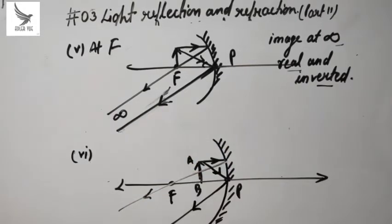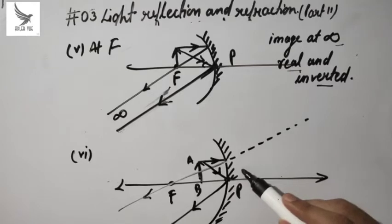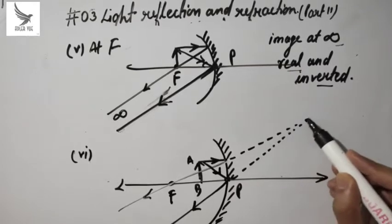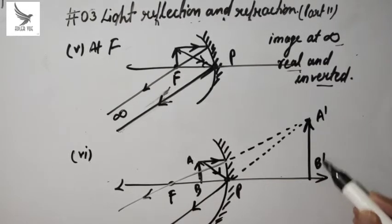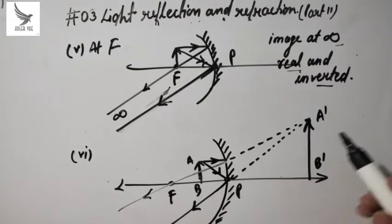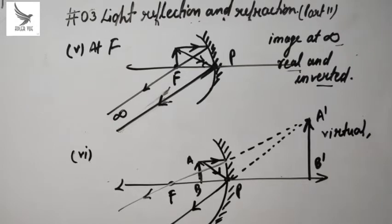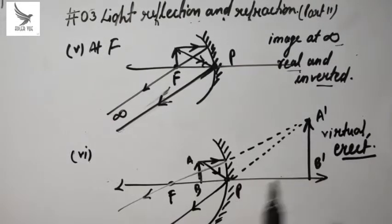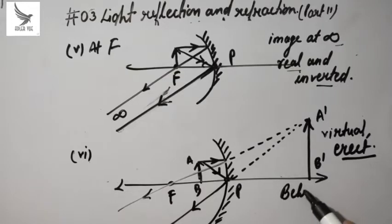Diverging rays appear to meet at infinity, but actually these two rays are diverging. To find the image of diverging rays, we extend them behind the mirror. Where these two extended virtual rays intersect — that is the image. So the object is AB and the image formed is A'B'. The image is not real — it is virtual, because the rays don't actually cut each other. And it is erect, because both object and image are upright.